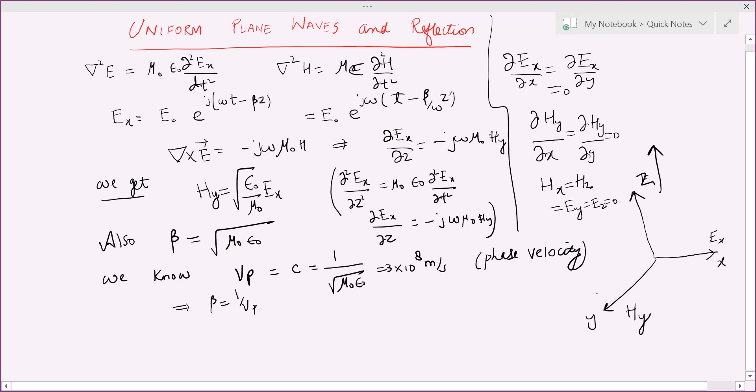Hence, with some simple assumptions, H_x and H_z will be zero, as will be E_y and E_z. Only E_x and H_y components of electric field will be there because we are considering a plane wave whose phase is constant and whose magnitude remains constant.